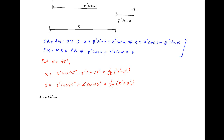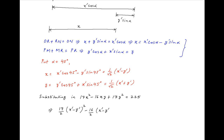Substituting these values of X and Y in the given equation of the curve 17X² minus 16XY plus 17Y² equals 225, we get (17/2)(X' minus Y')² minus 16·(1/2)(X' minus Y')(X' plus Y') plus (17/2)(X' plus Y')² equals 225.